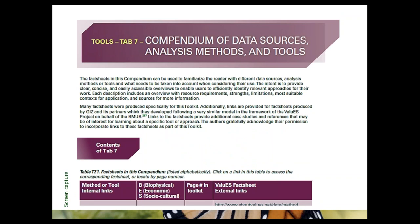Tool Tab 7 is a compendium of data sources, analysis methods, and tools — a series of 40 fact sheets with introductory information. It was a happy coincidence that after more than half were drafted, GIZ introduced their values compendium online with very similar subheadings. GIZ kindly gave permission to hyperlink to their fact sheets for topics not yet written, saving considerable effort.